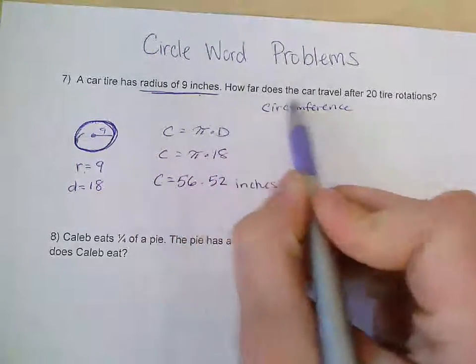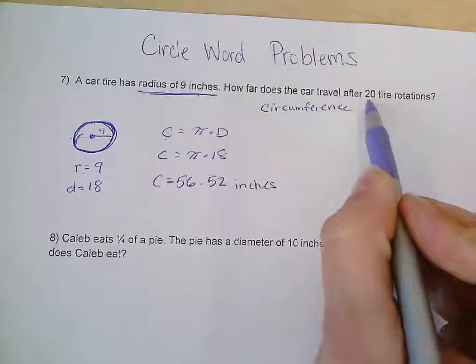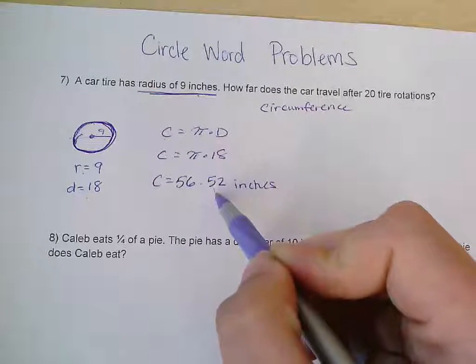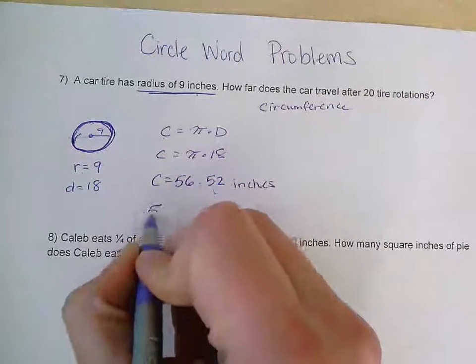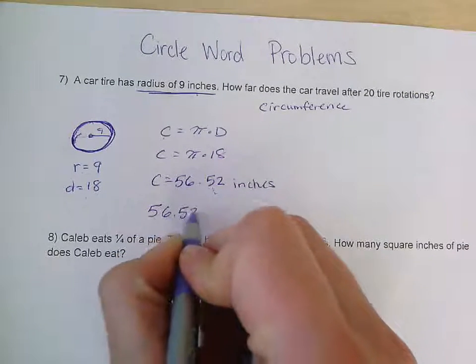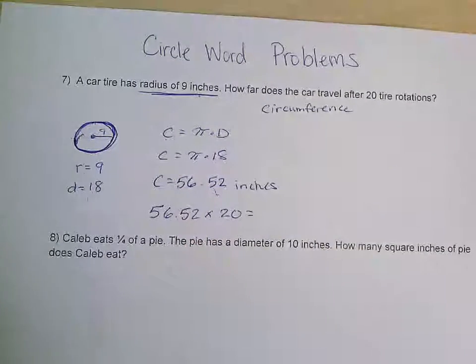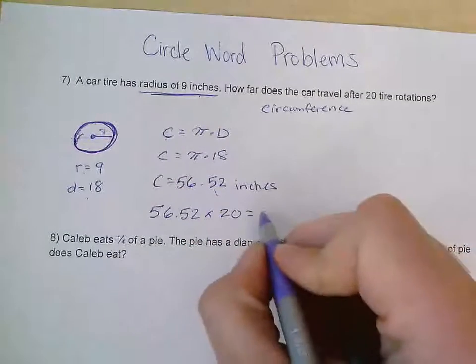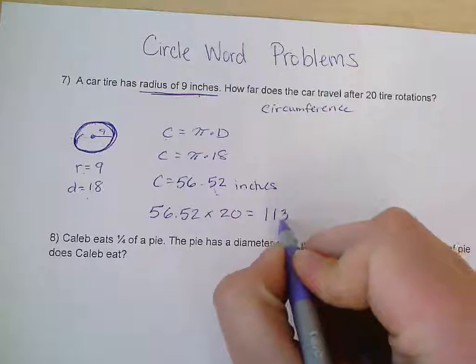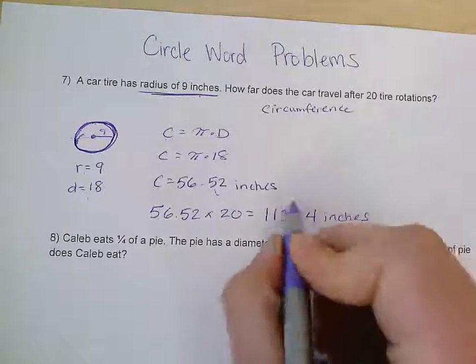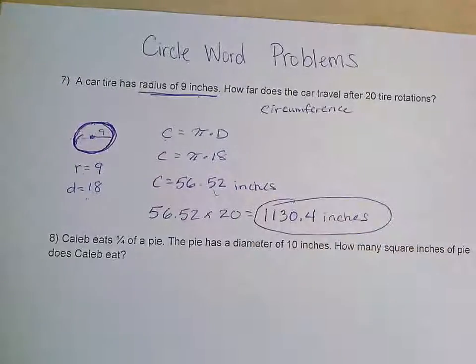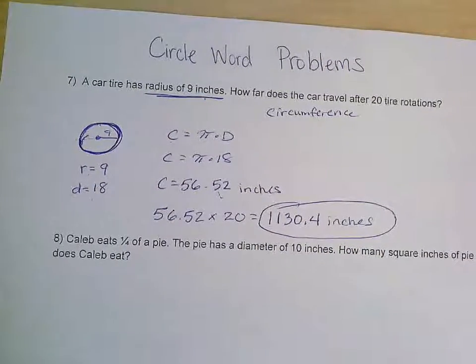But I need to know how far it goes after 20 tire rotations. And this is just one. This is a circumference. So it's one time around. I need it to go around 20 times. So the next thing I'm going to do is take 56.52 and multiply by 20. And when I do that, I get 1130.4 inches. And I could change that to feet if I needed to, but it doesn't say that I have to. So I'm just going to leave it as inches.